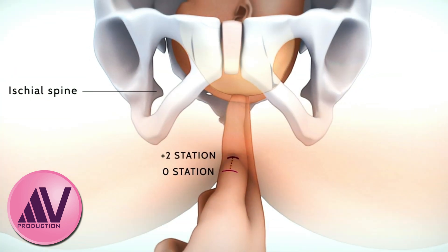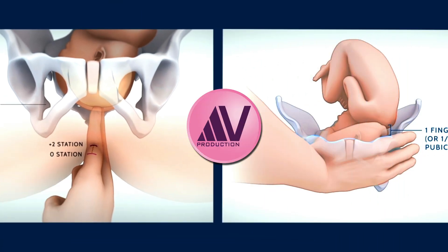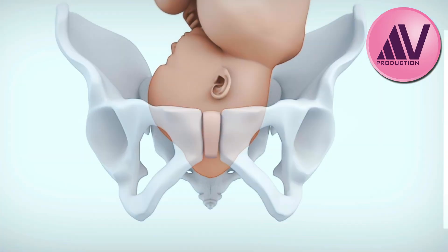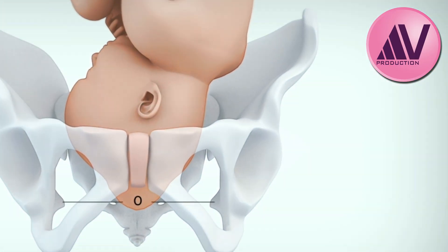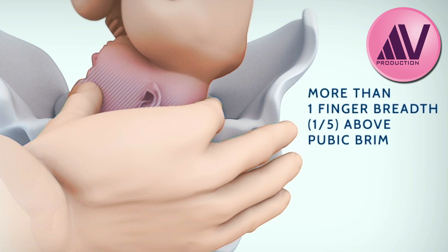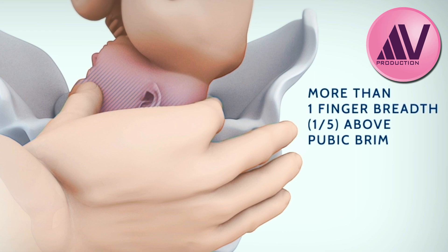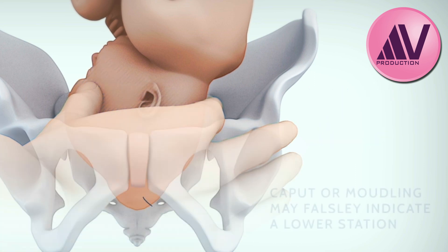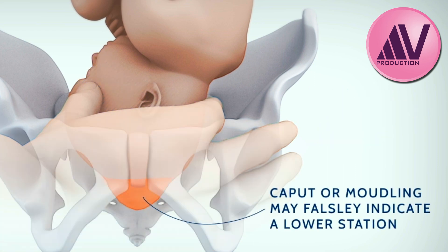Results from the abdominal and vaginal examination should correlate. If a zero station or lower station is measured but the fetal head is more than one-fifth palpable above the pelvic brim, caput or molding may be falsely indicating a lower station.